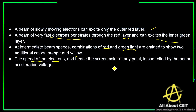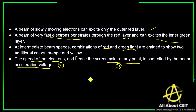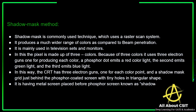The speed of electrons and the screen color at any point are controlled by the beam acceleration voltage. Only with the help of beam acceleration voltage are both the speed of electrons and the screen color at any point controlled. This concludes the beam penetration method.